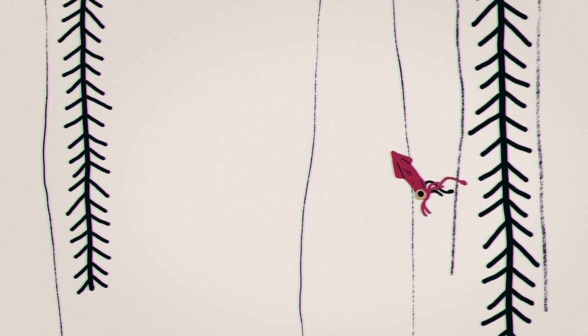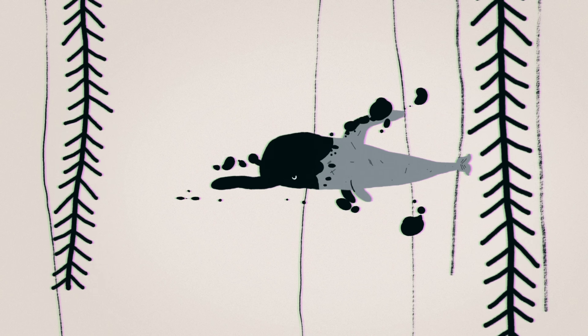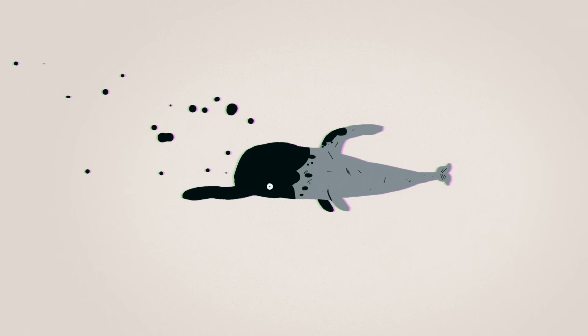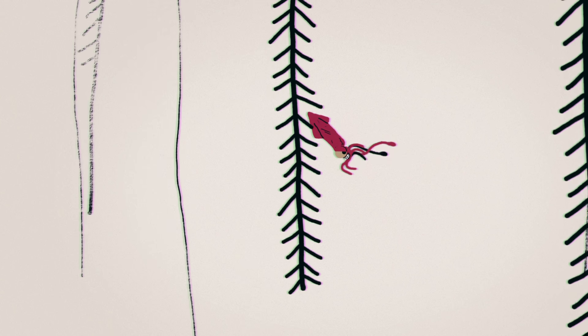When squid eject the ink, they either use it to make a large smoke screen that completely blocks the predator's view, or a blob that roughly mimics the size and shape of the squid. This creates a phantom form, called a pseudomorph, that tricks the predator into thinking it's the real squid.